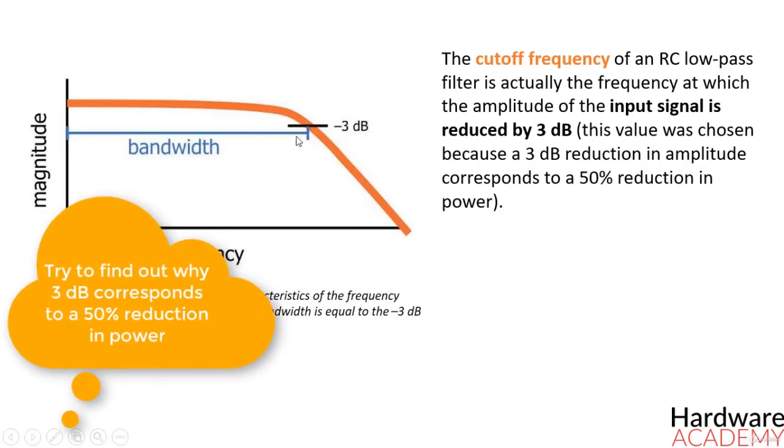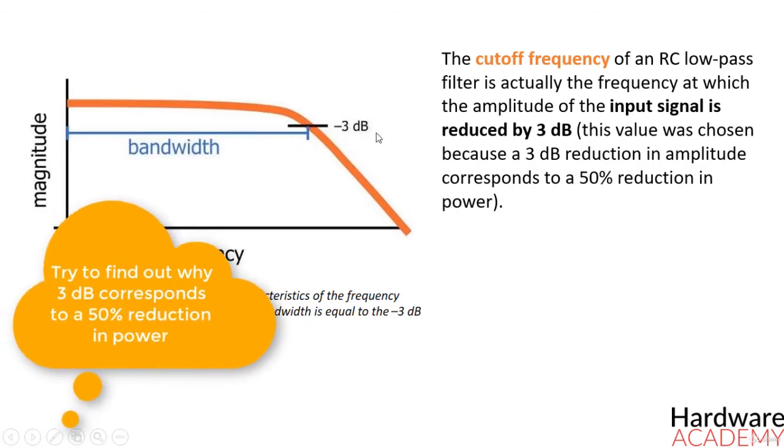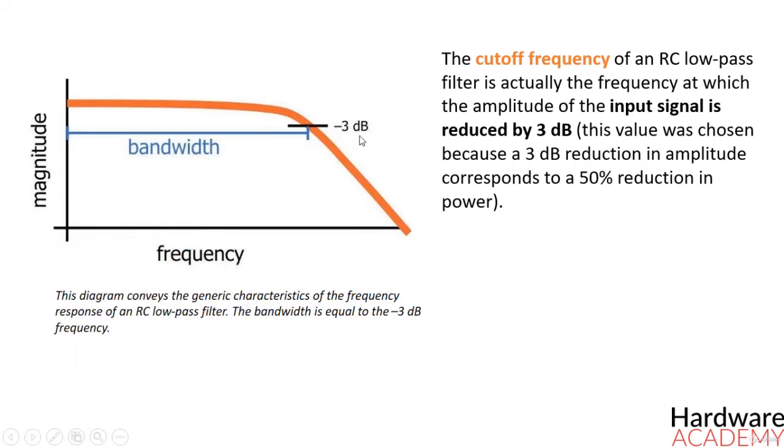As a result, the cutoff frequency is also called the minus 3 decibel frequency, and in fact this name is more accurate and more informative. The term bandwidth refers to the width of a filter's passband, and in the case of a low-pass filter, the bandwidth is equal to the minus 3 decibel frequency.